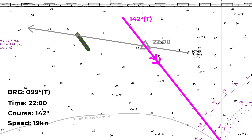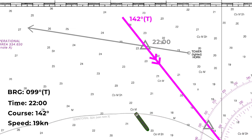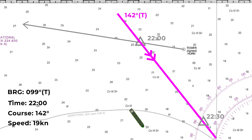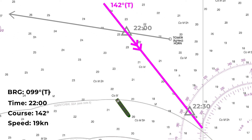If we plan to run on for 30 minutes we can also estimate the distance we're going to travel. We said that we're traveling at 19 knots, so in half an hour we're going to travel 9.5 miles. This can give us another estimated position for a time of 2230.